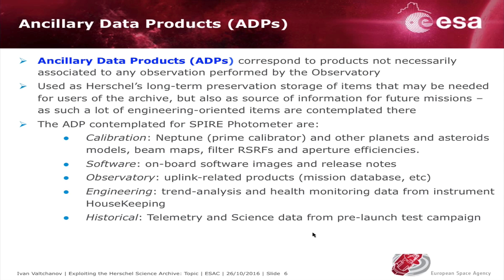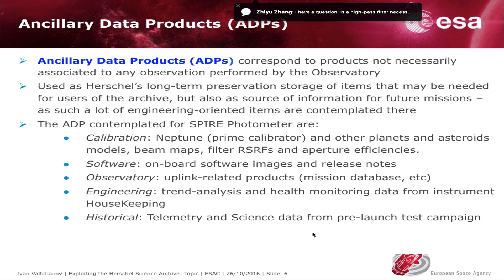For the Spire Photometer, the ancillary data products include: calibration files, calibration models, Neptune — which is our primary calibrator — and other planet and asteroid models, beam maps, filter relative spectral response functions, and aperture efficiencies. Some of these are already available in the Spire calibration context and can be downloaded from the Herschel Science Archive, but providing them as separate files is also quite useful for archive users.